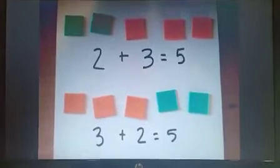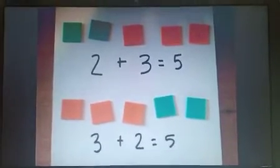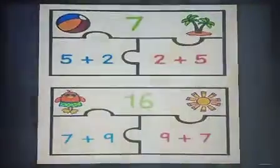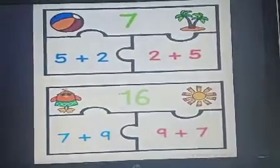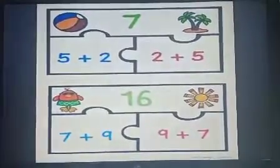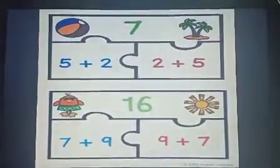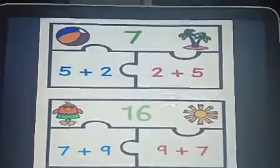2 plus 3 is 5 and 3 plus 2 is also 5. Let's see another example. 5 plus 2 is 7 and 2 plus 5 is also 7. Similarly, 7 plus 9 is 16 and 9 plus 7 is also 16.